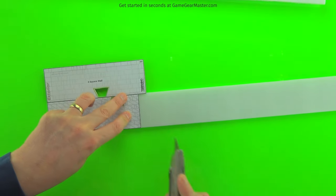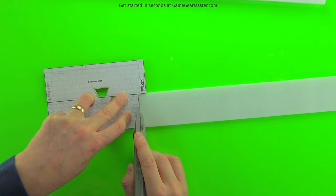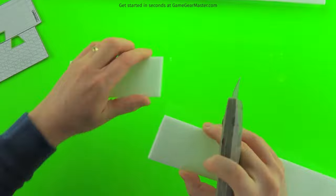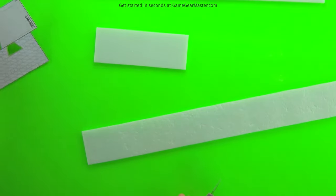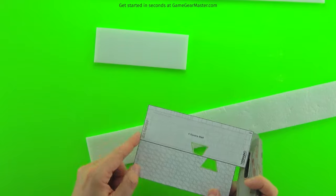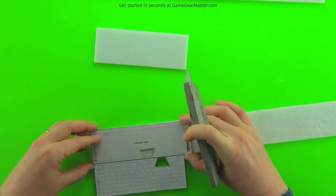And it's as easy as lining up the template, scoring the edge of the foam, and snapping it off. Now remember, you're going to need one interior piece for every two exterior pieces. So you're going to cut off two pieces here.